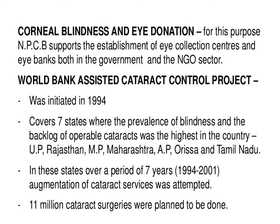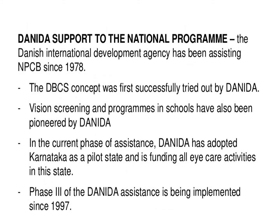5. The World Bank Assisted Cataract Control Project was initiated in 1994 and covers seven states where the prevalence of blindness and backlog of operable cataracts was highest: UP, Rajasthan, MP, Maharashtra, AP, Odisha and Tamil Nadu. In these states, over a period of seven years, augmentation of cataract services was attempted, with 11 million cataract surgeries planned.